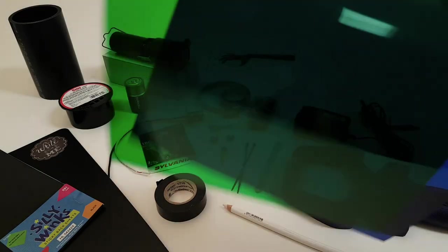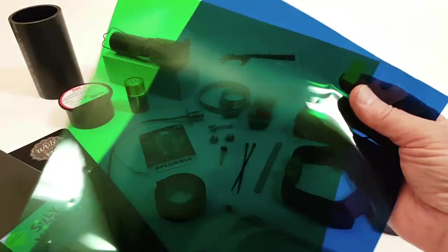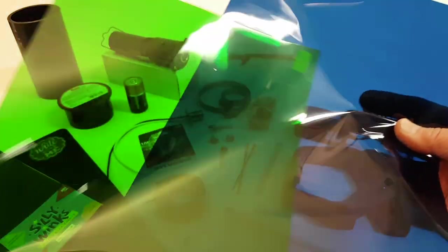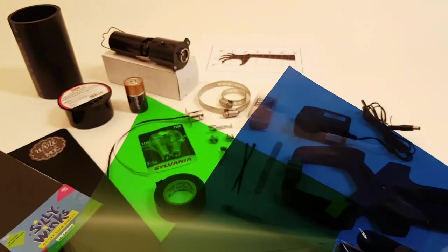And a transparent gel in the color of your choice. This is optional and used only if you wish to change the color of the light. These are professional gels used for film, video and stage lighting.